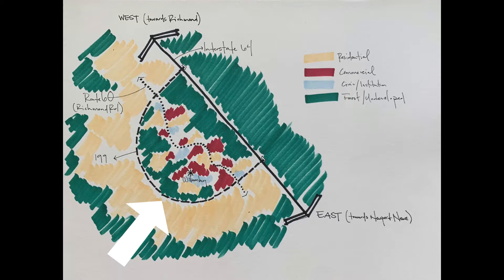199 has mostly remained the same. 64 as of late, especially between Richmond and Newport News, is growing from a four-lane to a six-lane highway, so congestion has definitely increased going to and from these two or three places.